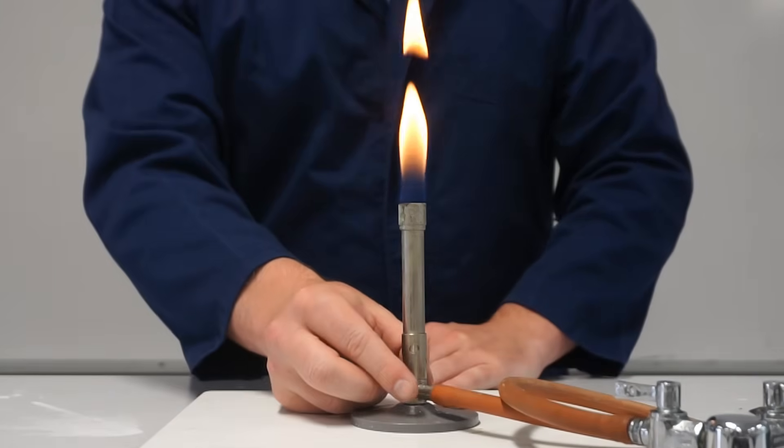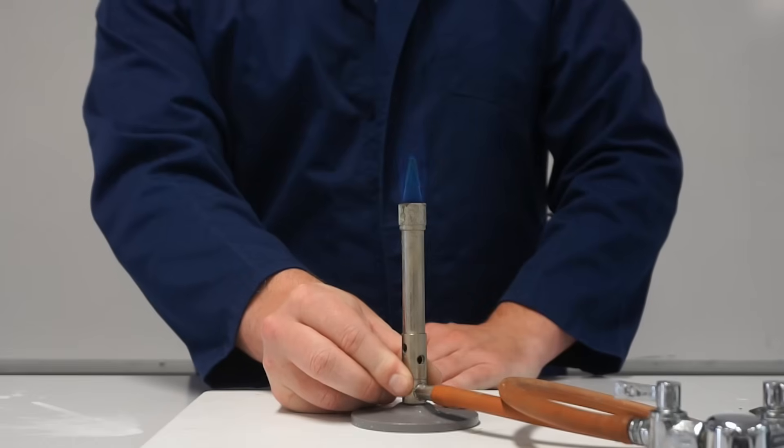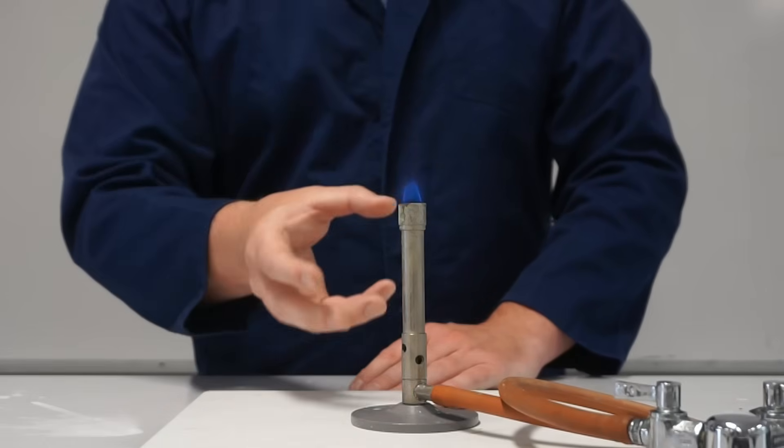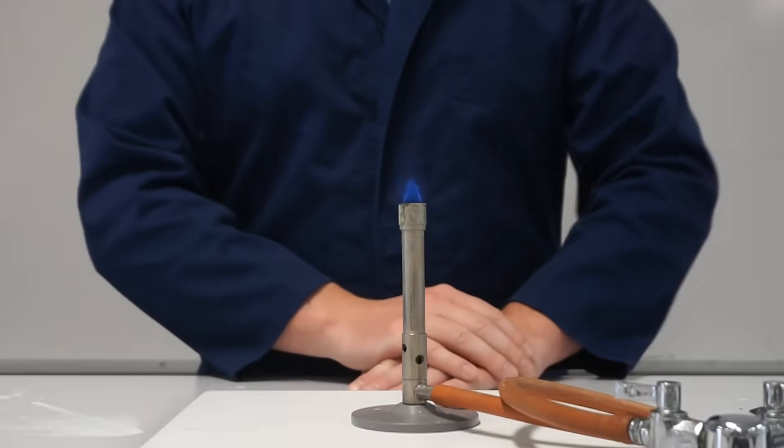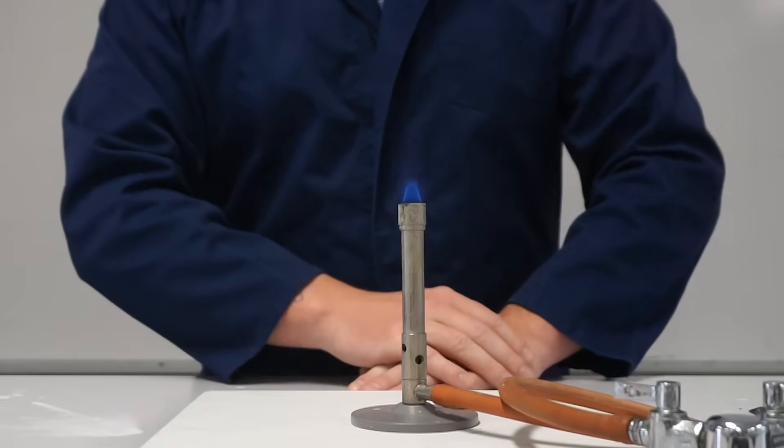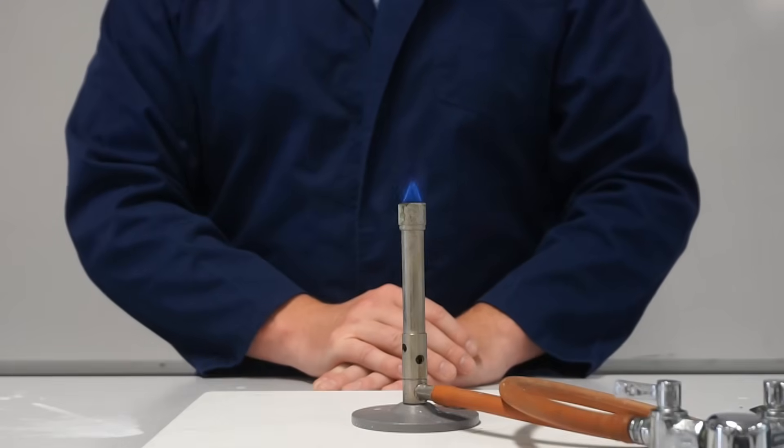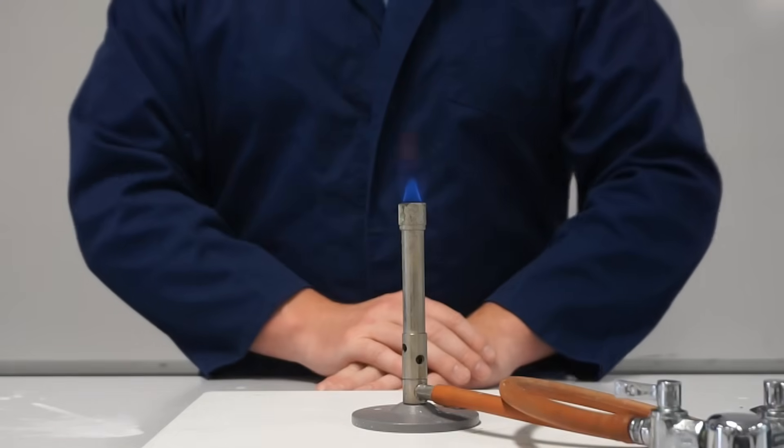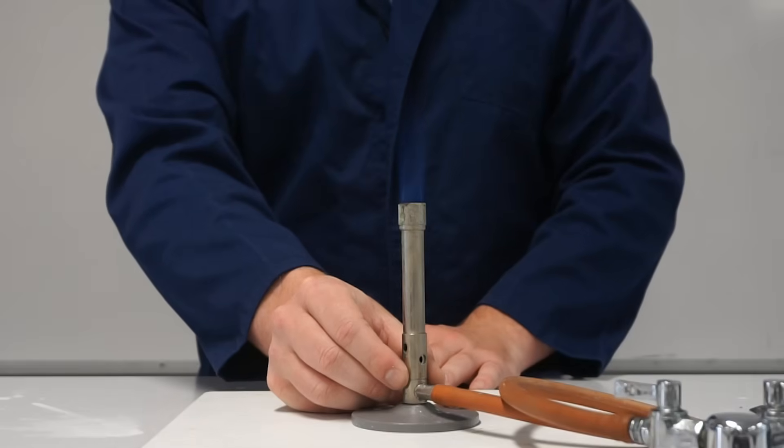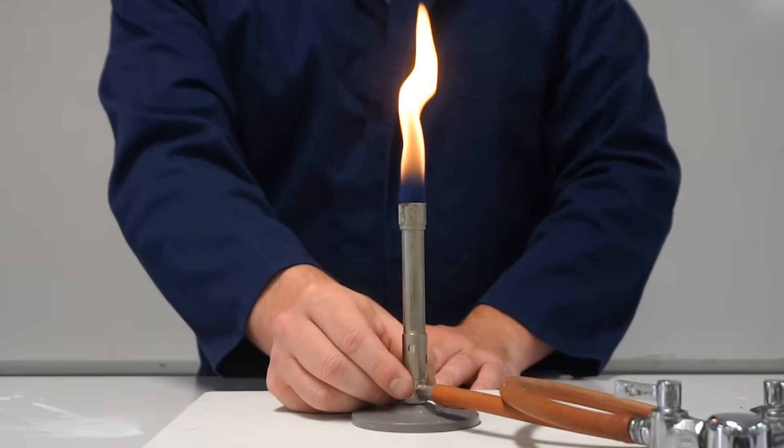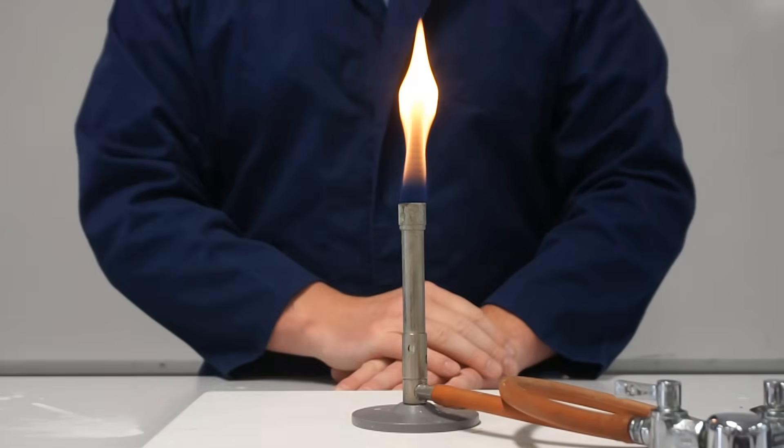I can now rotate the collar to open up the air hole and in doing so I'm allowing more oxygen into that flame and the flame gets much hotter. It's now a blue flame, barely visible blue flame and this is the flame that we would use for heating things up. Again if we want to leave the Bunsen burner unattended for whatever reason we would switch it back over to the yellow flame which is sometimes called our safety flame because it's less hot and it's much easier to see.